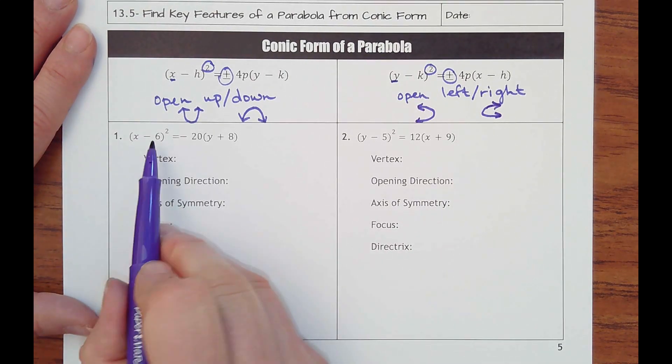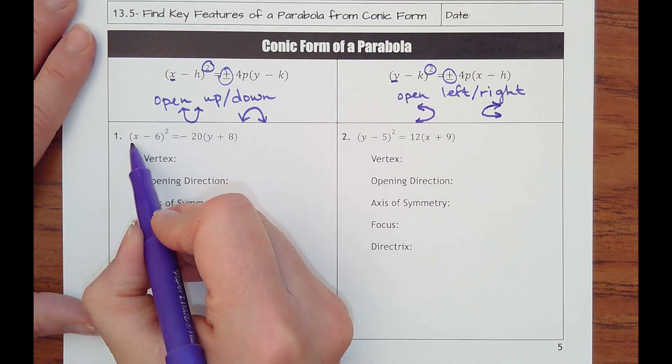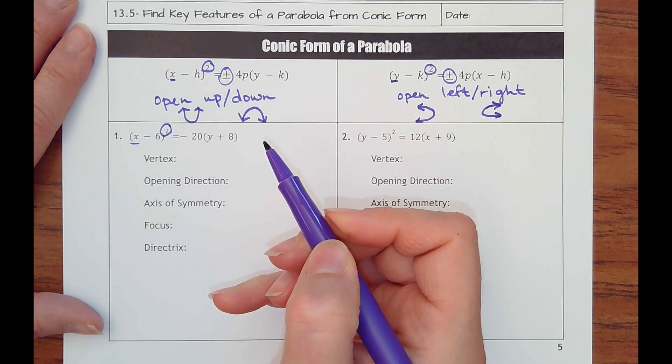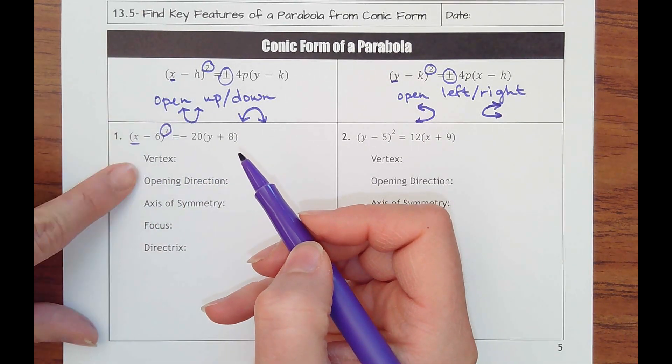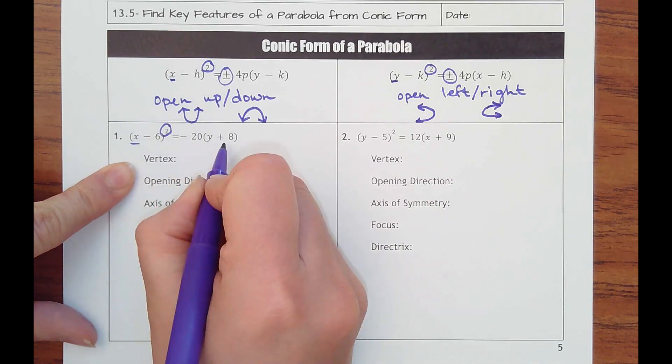Let's try to pull that information out of an actual equation. When I see x being squared, I know that's an open up or down. The vertex, let's pick that out. That's 6, negative 8.